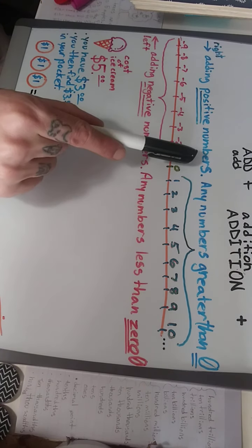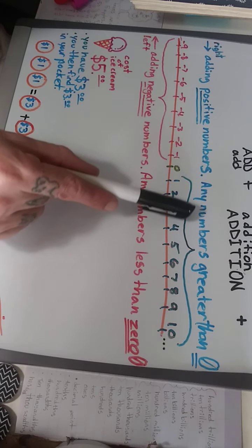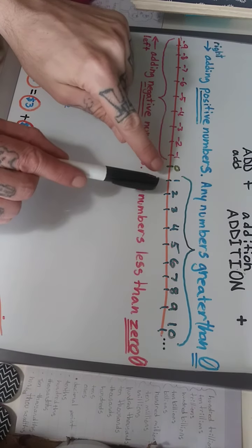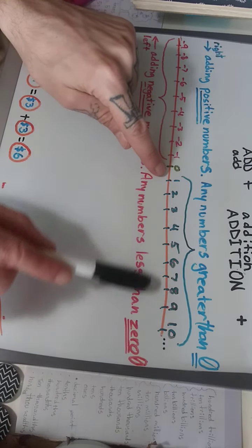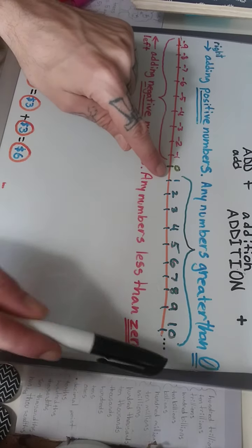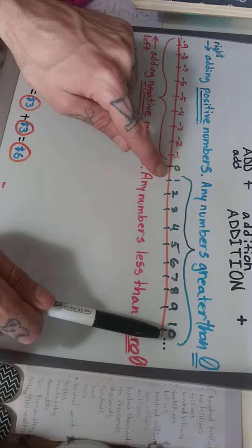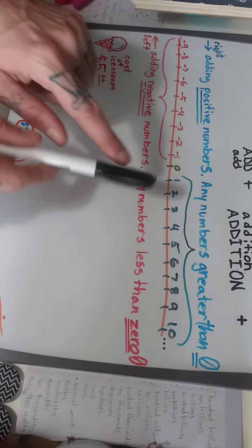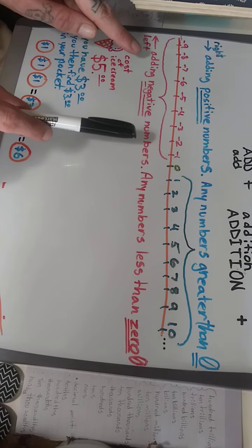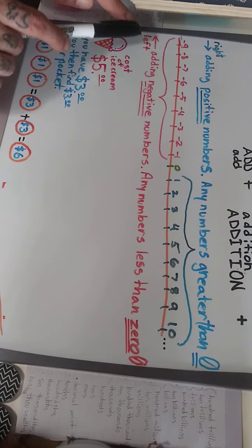Adding positive numbers, which are any numbers greater than zero, and three dots means that continues on forever. Positive numbers don't just stop at ten. And then adding negative numbers, any numbers less than zero.